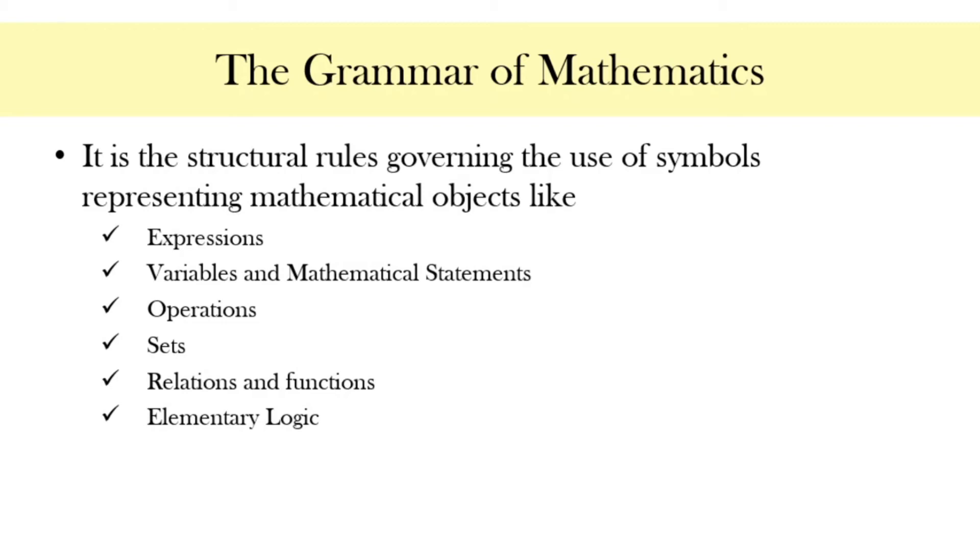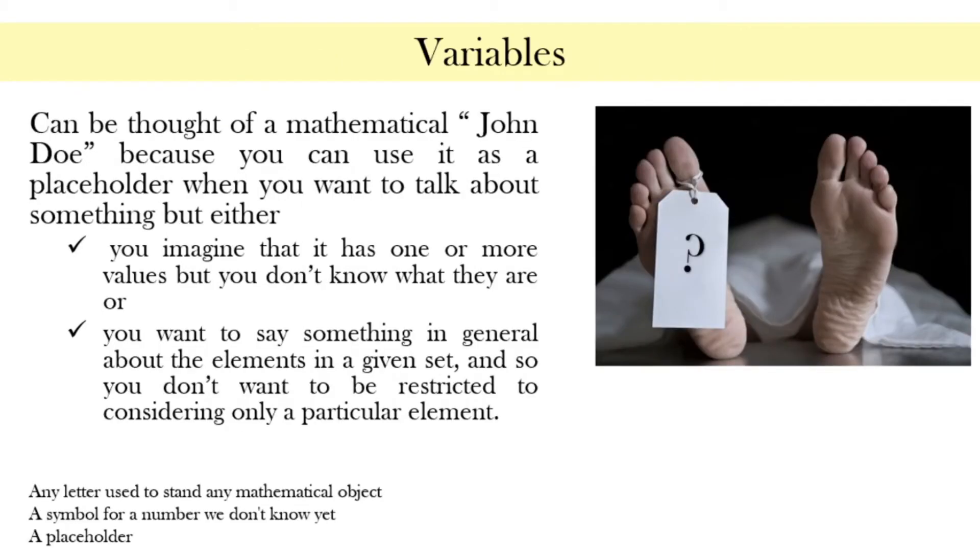Let us begin with the concept of variables. Have you ever watched a movie involving a crime scene where the police or agents were not able to identify a dead body and just called that unidentified dead body John Doe or Jane Doe if it's a female? The name John Doe or Jane Doe is not really a specific name but a term that we use to mean that that body could be anybody. Later on, they would discover the real name of that unidentified body but for now they will just call it John Doe while the identity of that body is still unknown.